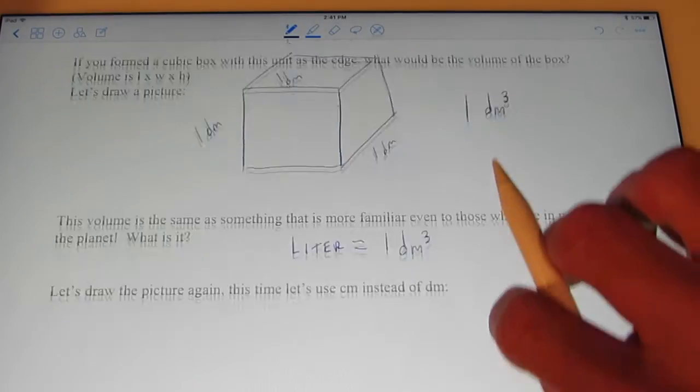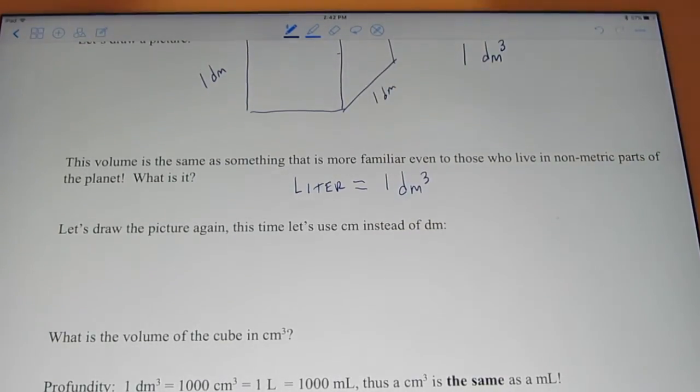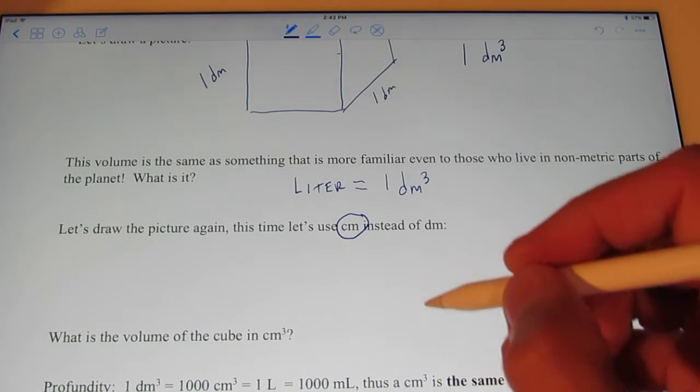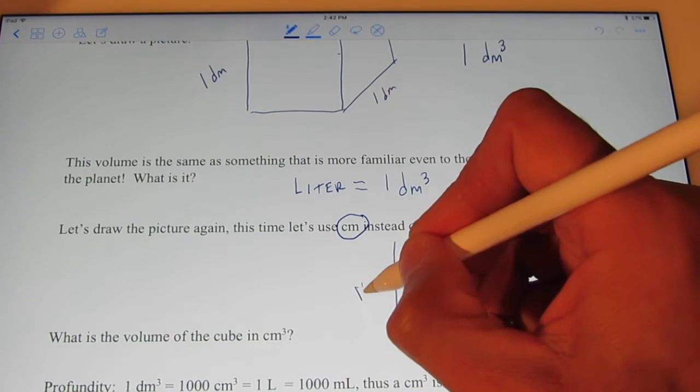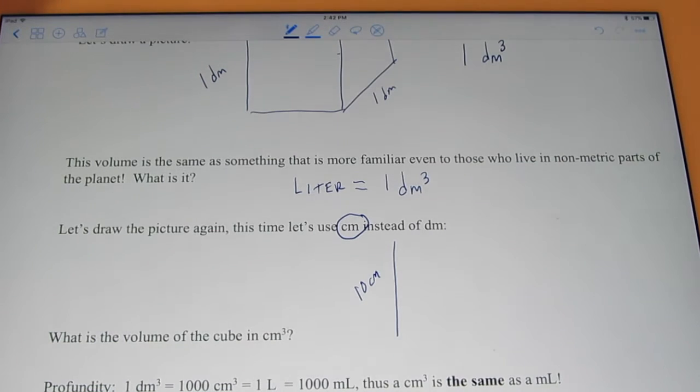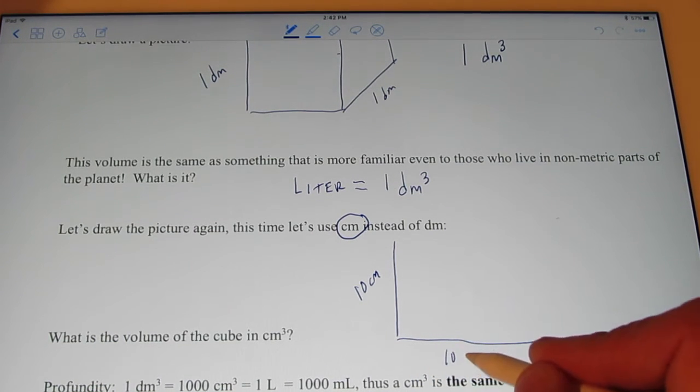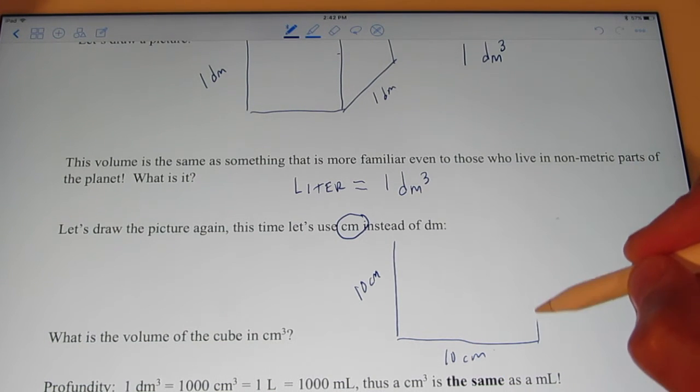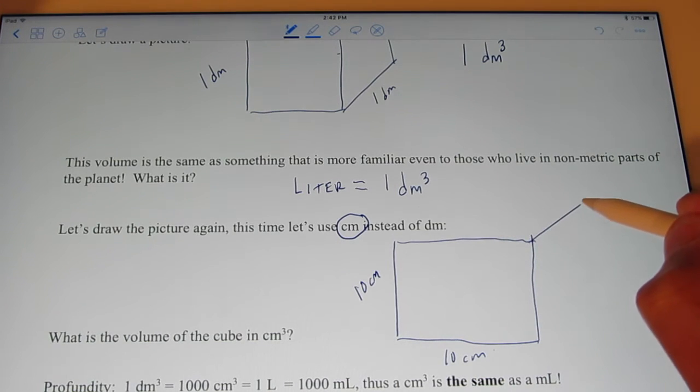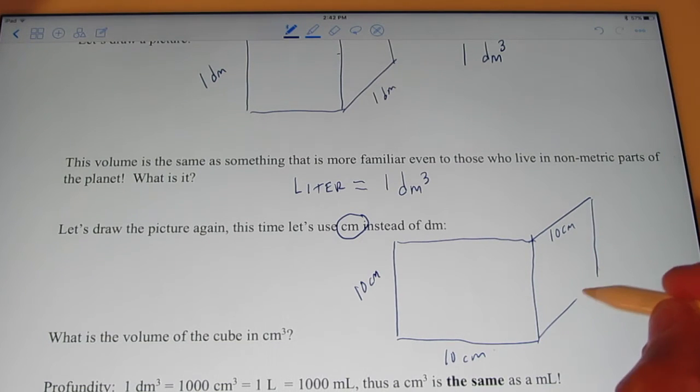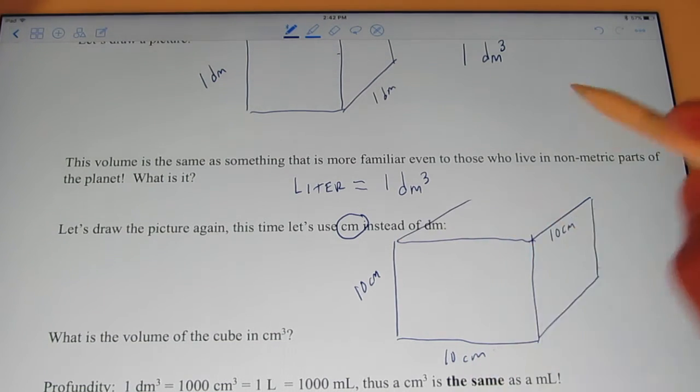Now, let's draw that same picture, a decimeter by a decimeter by a decimeter, but this time let's use centimeters instead of decimeters. If it's a decimeter tall, that would be 10 centimeters tall. And a decimeter wide would be 10 centimeters wide. Let's make it 10 centimeters deep.